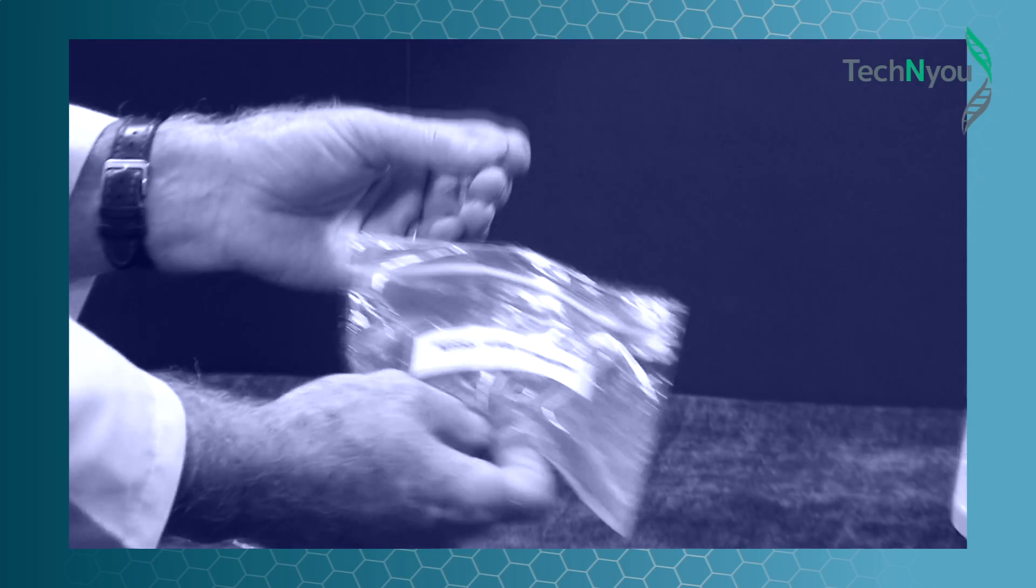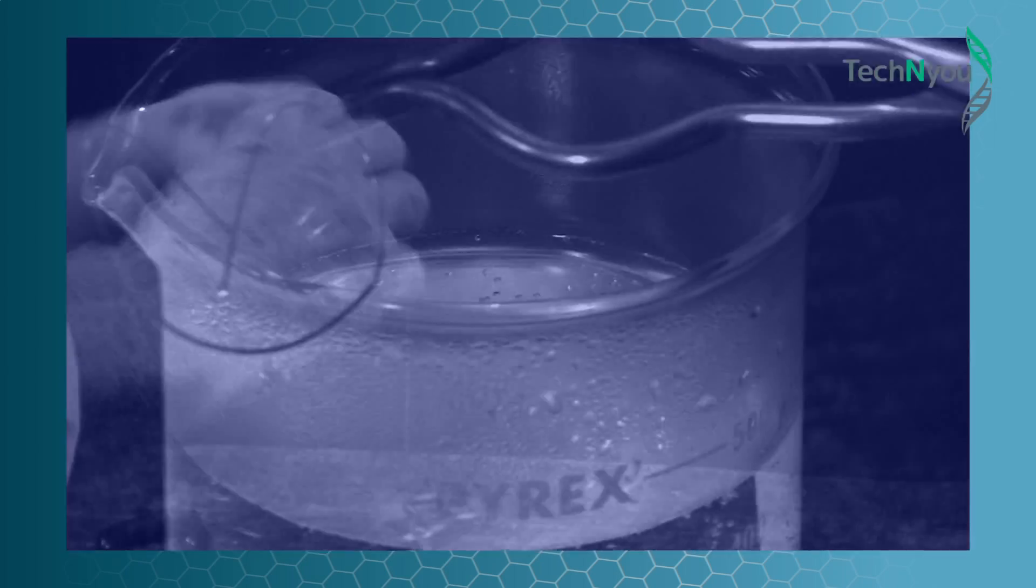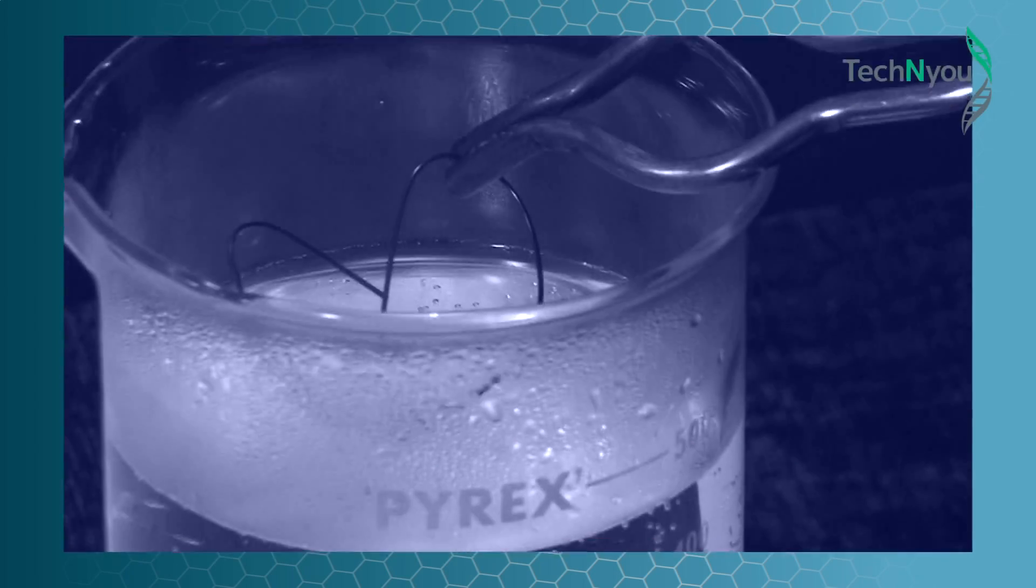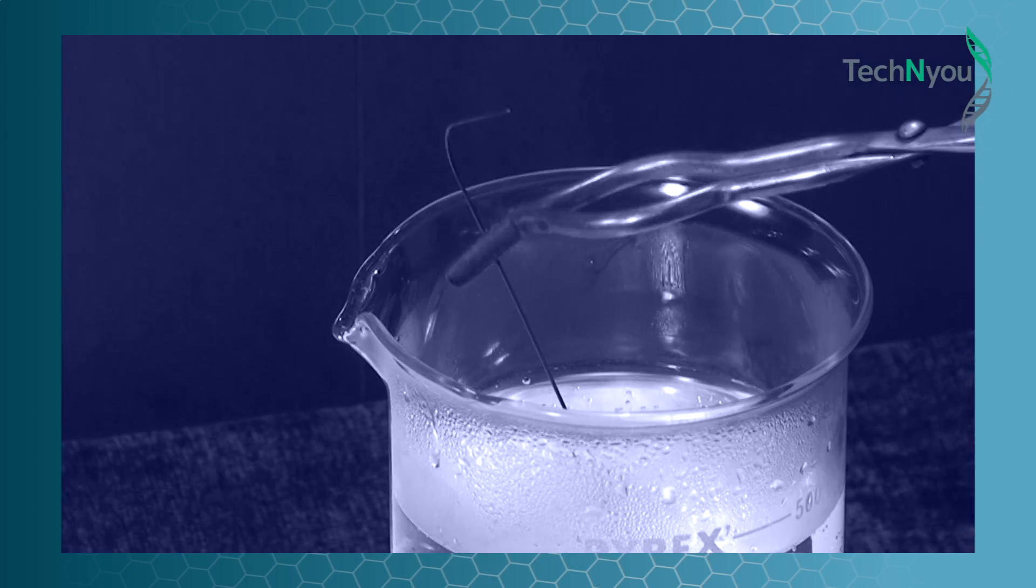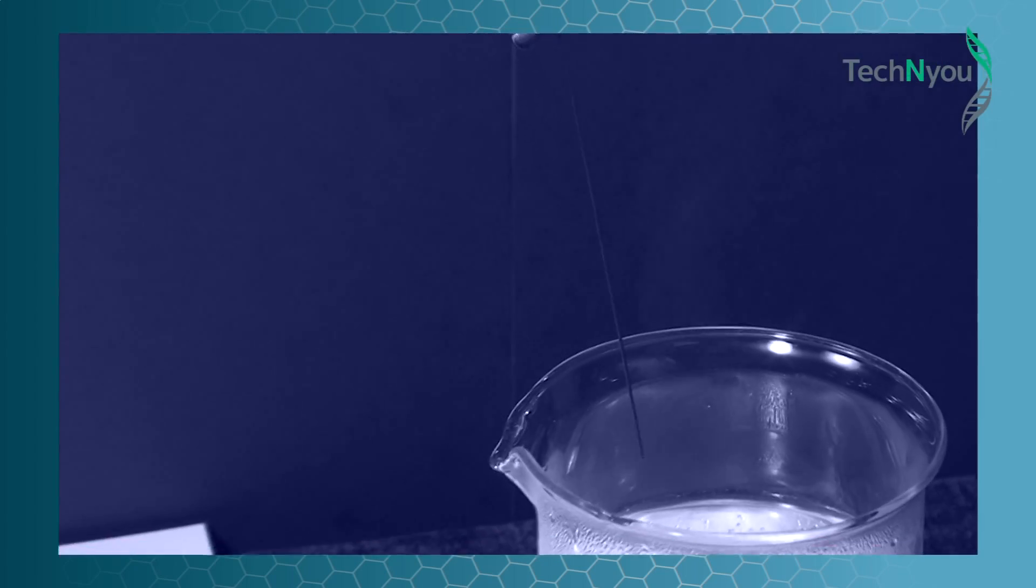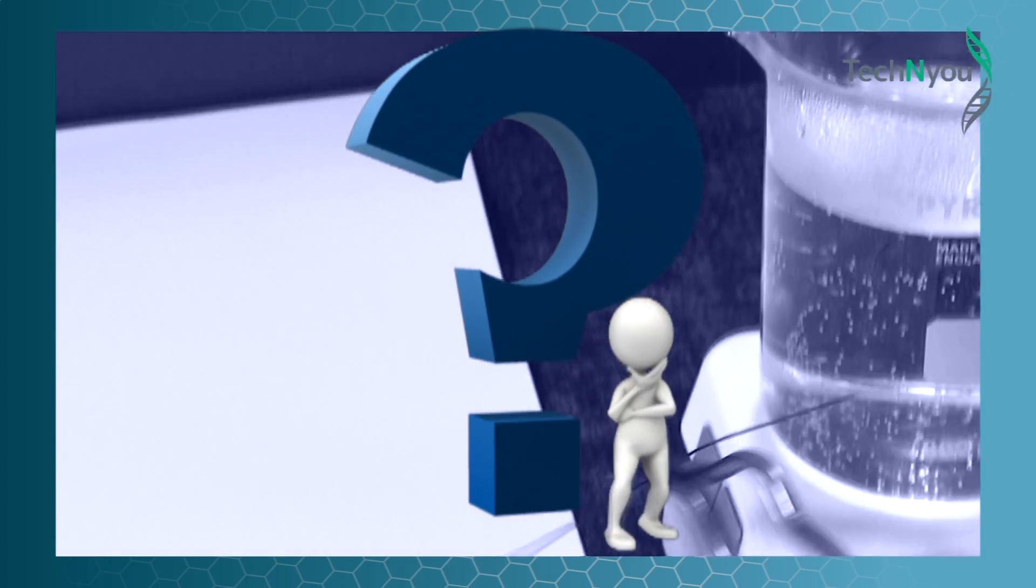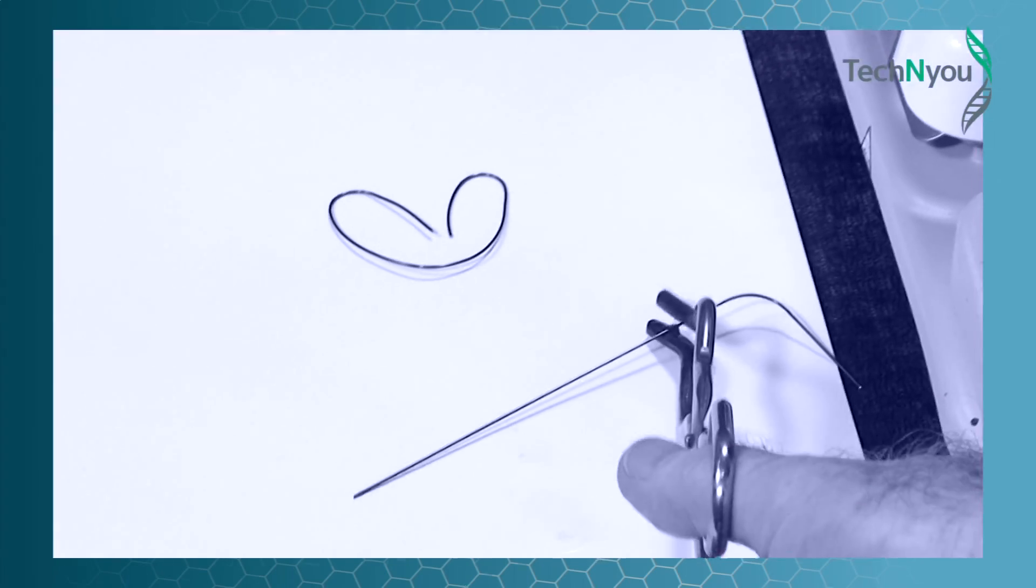We deformed it at room temperature. But at a certain temperature, known as the transition temperature, it sprang back to its programmed shape. How did we do that? In this final part of the experiment, we show you.